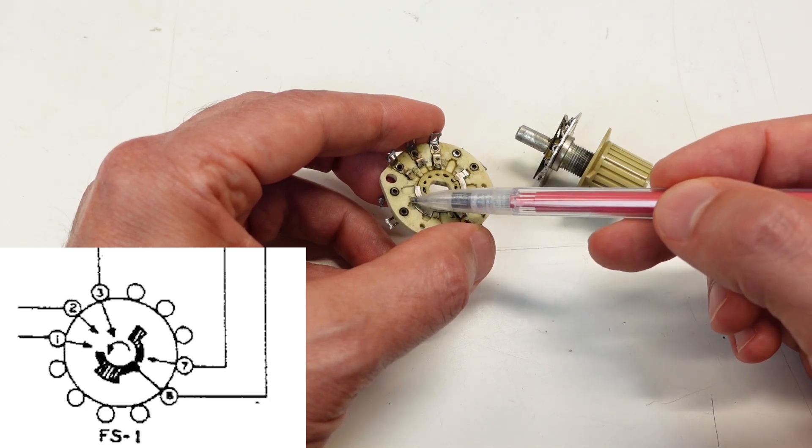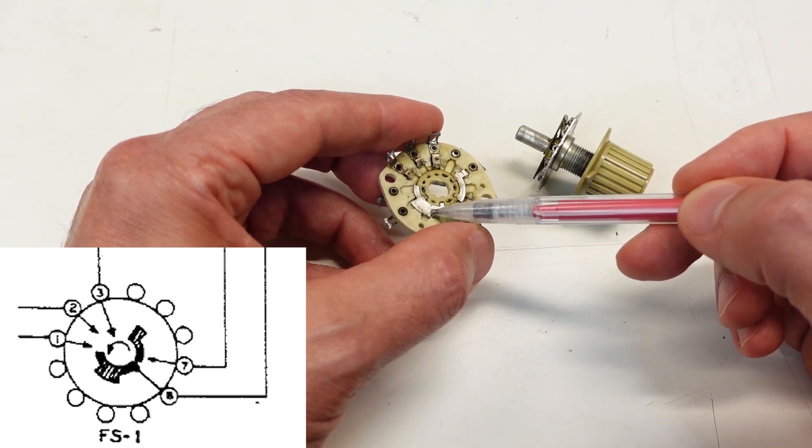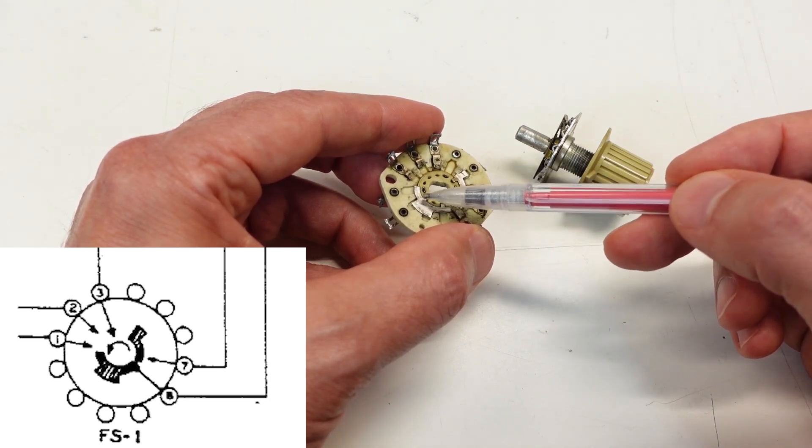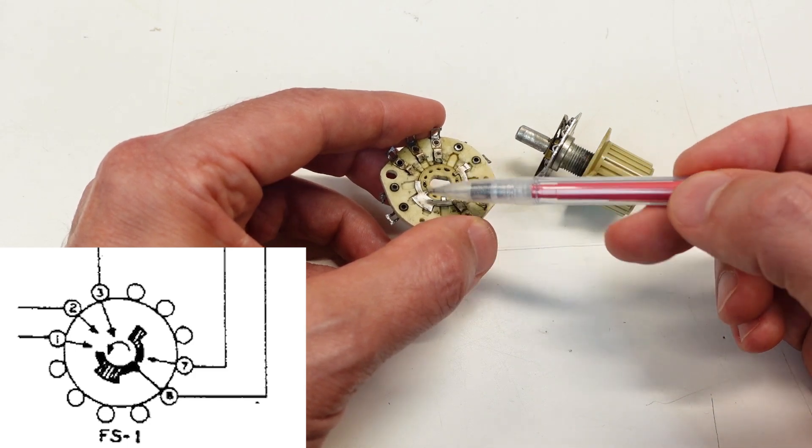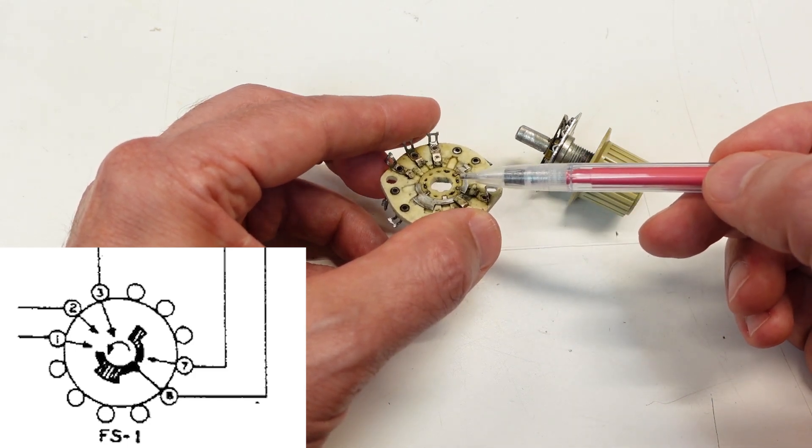The good news is both of these poles appear to be still functional. There is some arc erosion, especially on the edges of the little rotors as they rotate around. And there's some mechanical wear, but it's not that severe. So I think this side of the function switch is still usable.